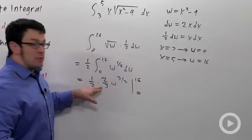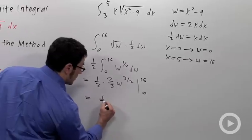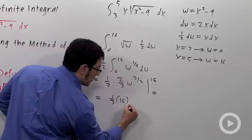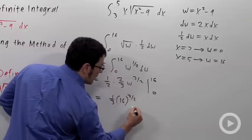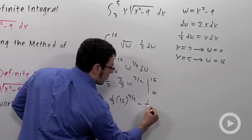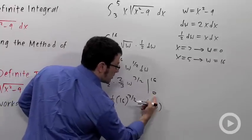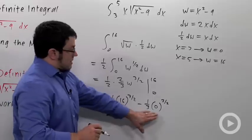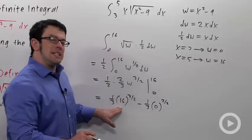Now 1 half times 2 thirds is 1 third. So it's 1 third 16 to the 3 halves minus 1 third 0 to the 3 halves. Now, of course, this is going to be 0.